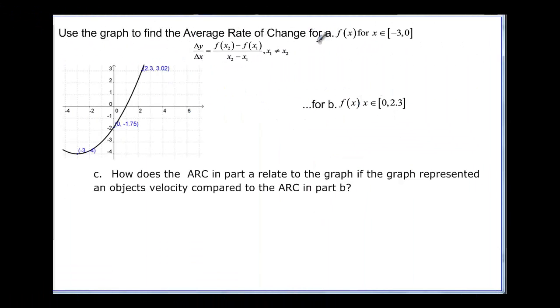So let's try it. Use the graph to find the average rate of change for part a. f of x is an element between negative 3 and 0, these are x values. So from negative 3, we're talking about this point right here, and to x equals 0, we're talking about this point right here.